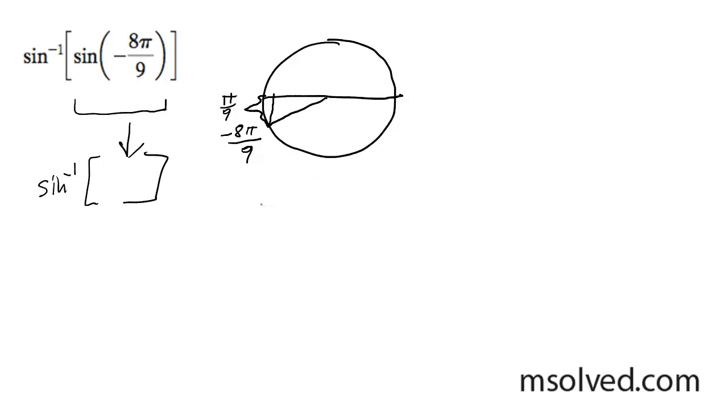it's going to have to be between the bounds of negative pi over 2 to pi over 2. So that simply means it's going to have to fall somewhere within here and here.